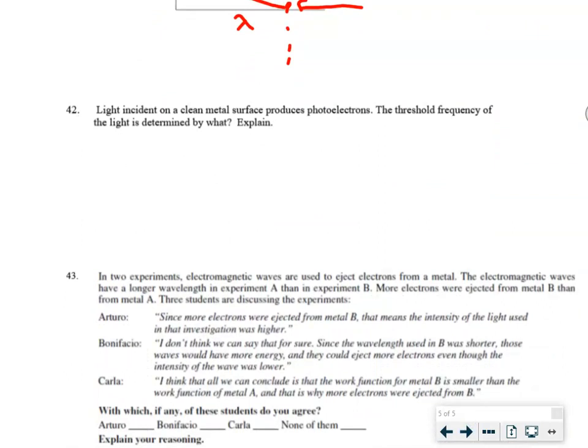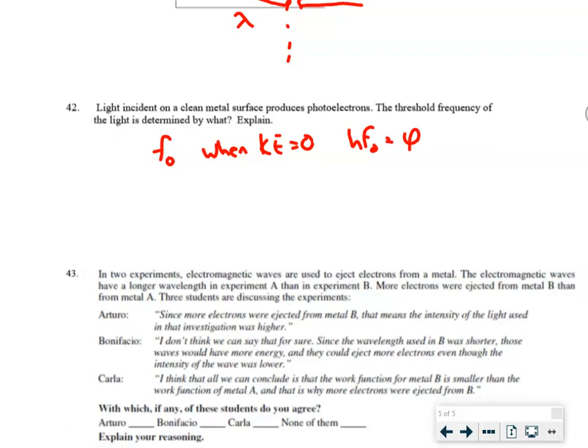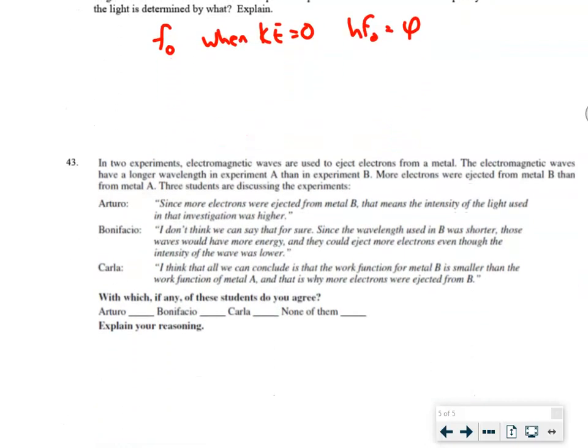Threshold frequency, how is it determined? So basically, that's determined as the threshold frequency when KE is zero. We've talked about that. So HF naught equals the threshold frequency, or excuse me, equals the work function. And the work function, you should mention, is also determined by the metal.